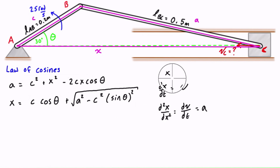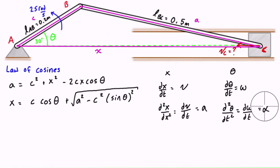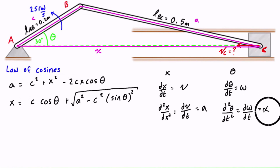When differentiating, we'll leave theta as a variable rather than substituting in the numerical value. The reason is that the initial expression will have theta in it; when we take the derivative of theta with respect to time we get omega, which is angular velocity. Taking the derivative of angular velocity — the second derivative of theta — gives d²θ/dt², which equals dω/dt, which is angular acceleration.